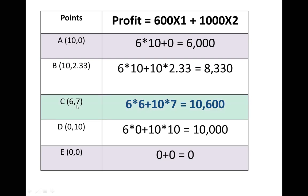The graphical solution has advantages: it is simple and easy to understand. However, the main disadvantage is that we cannot use the graphical solution if we have more than two decision variables. The graphical method is mainly used to explain the idea of what it means to solve linear programming and find the optimal solution. If you are minimizing cost or time, the process is the same but in the last step you find the minimum value, not the maximum.